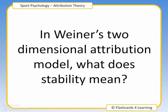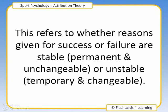In Weiner's two-dimensional attribution model, what does stability mean? This refers to whether reasons given for success or failure are stable, permanent and unchangeable, or unstable, temporary and changeable.